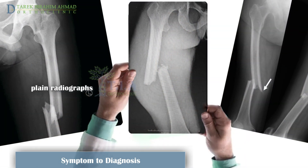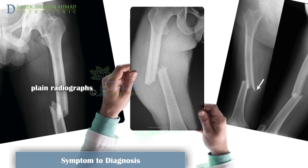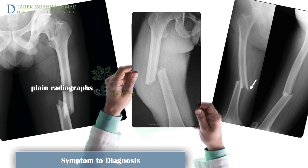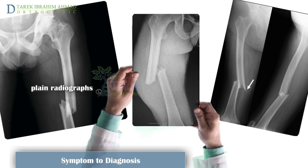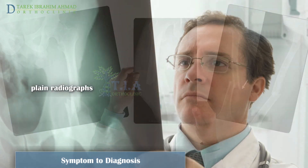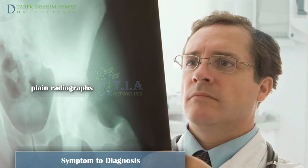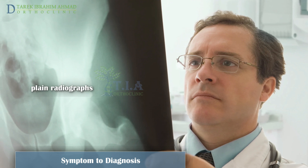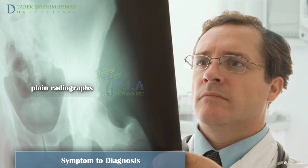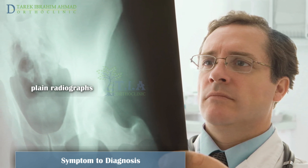Anterior-posterior and lateral plane radiographs of the thigh should be obtained when a femur fracture is suspected. Careful radiographic examination in at least two planes is necessary to determine the exact site and configuration of the fracture pattern. The hip and knee should also be examined with radiographs to rule out associated injury. A femoral neck fracture may occur in association with a mid-shaft femur fracture and, if overlooked, can result in significant morbidity and even mortality.